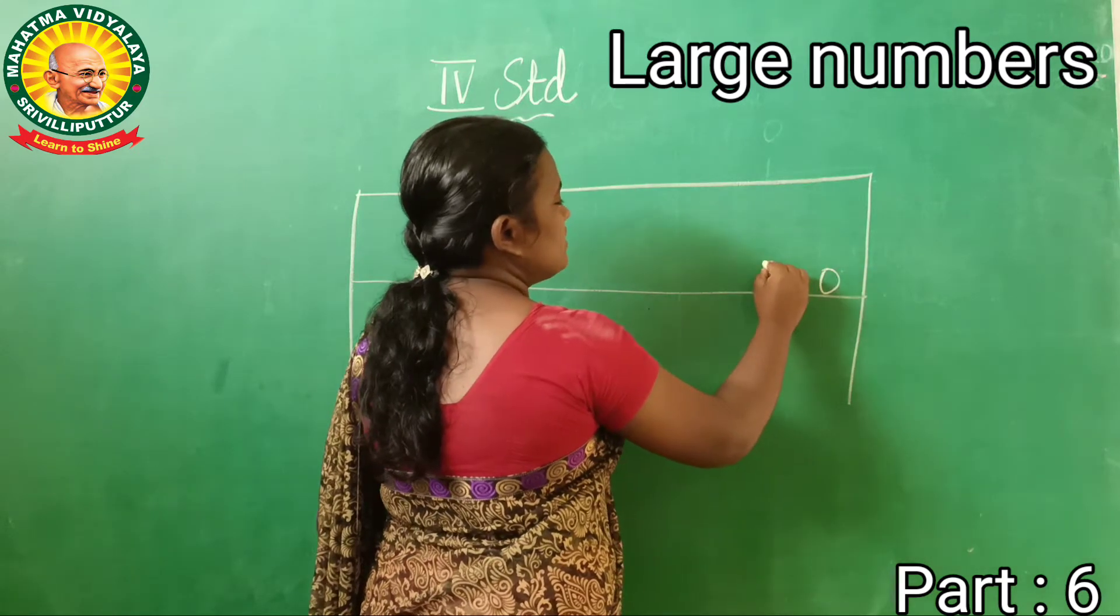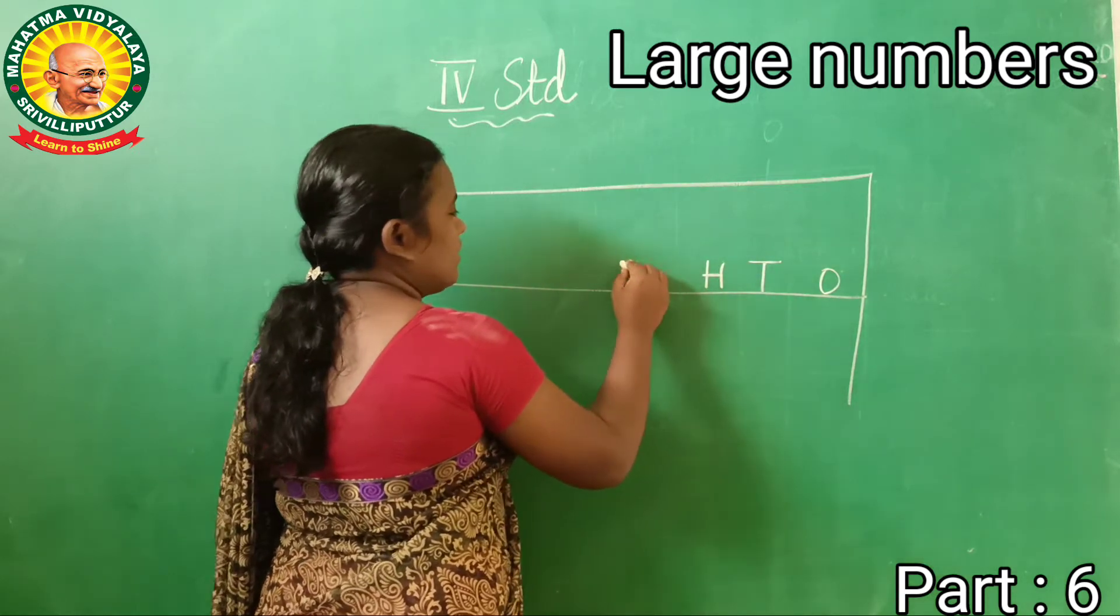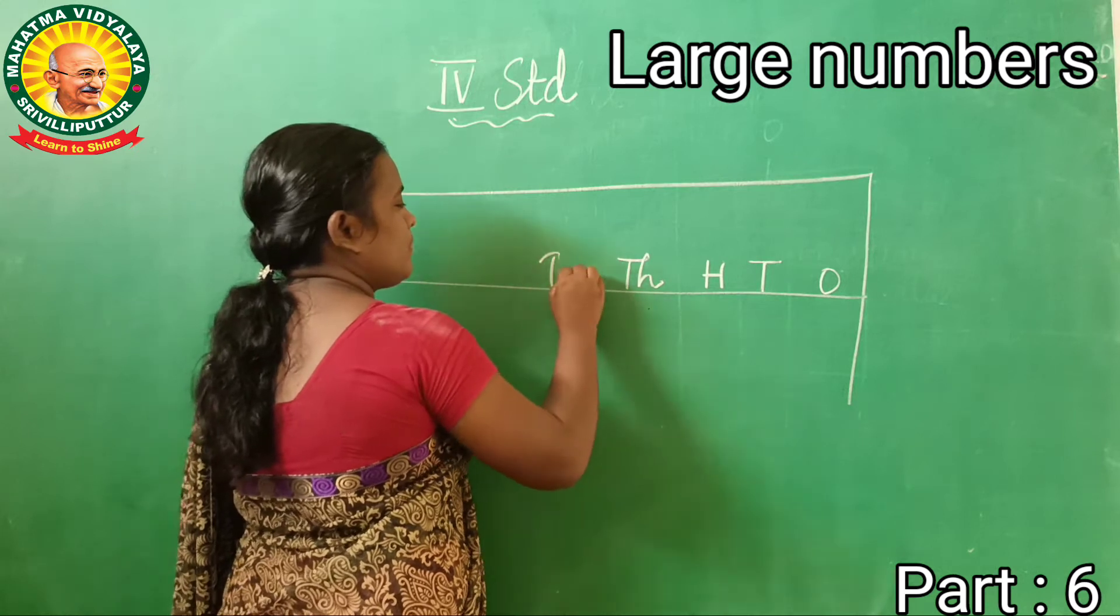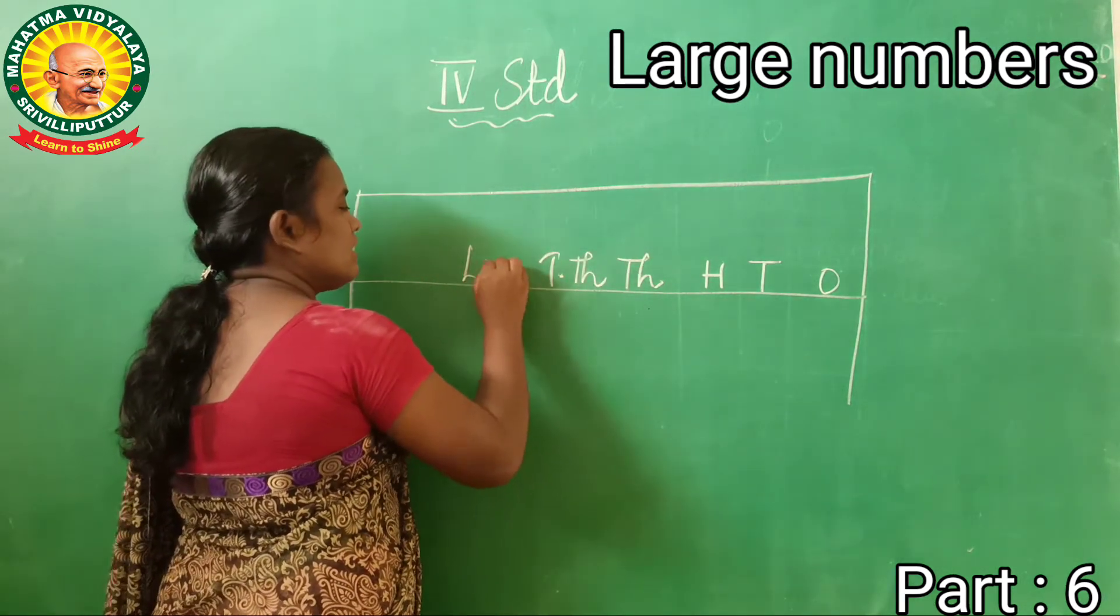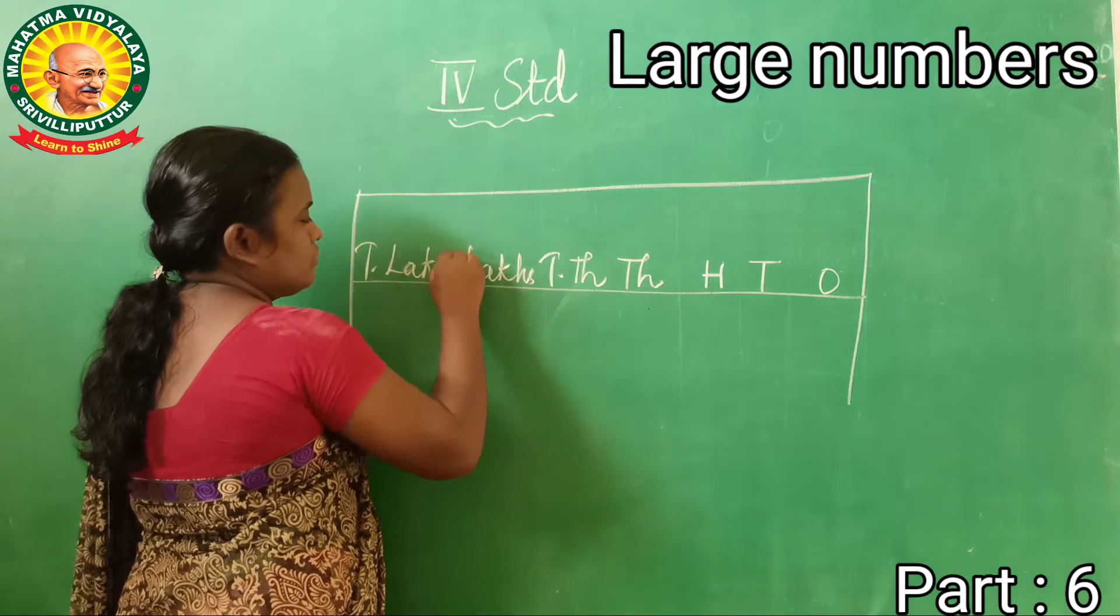Next one is tens. Next one is hundreds. Super. And next, thousands. Next one is ten thousands. And next one is lakhs. Next one is ten lakhs.